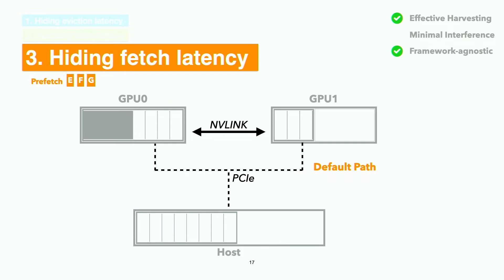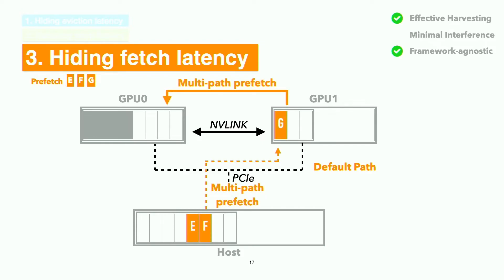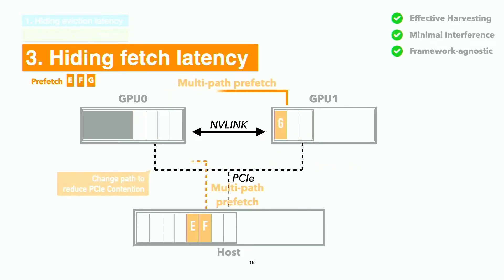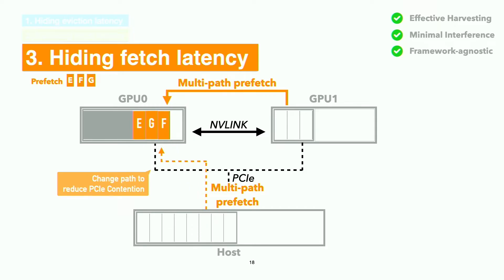This is the workflow of multi-path prefetch coordinated by MemHarvester. Pages E, F, and G need to be prefetched for hiding future latency. Page G, located on harvested GPU 1 memory, is prefetched to GPU 0, while pages E and F are prefetched from host memory to harvested GPU 1 memory via PCIe. However, when the number of active harvesters increases, to reduce PCIe contention, pages E and F are directly prefetched from host memory to GPU 0.